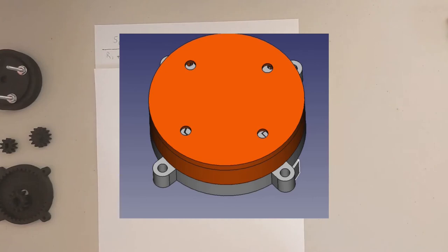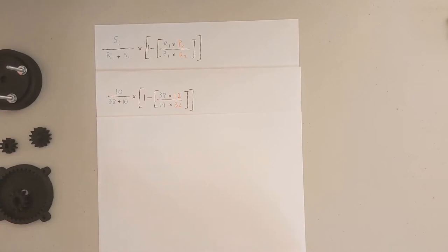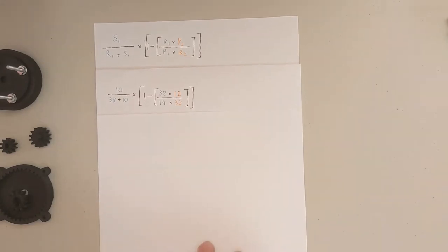If we just look at our scenario for this particular gearbox, we have 10 teeth on the sun, ring one has 38 teeth, and p1 has 14 teeth. For p2 we have 12 teeth, and ring two we have 32 teeth.